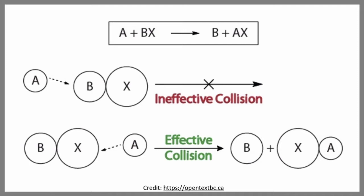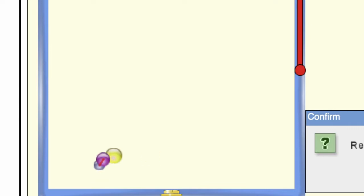We can also see this in this PhET simulation here. If the molecules hit at just the right angle, a reaction will happen. However, if they hit at the wrong angle they will just bounce off each other and the collision will not be effective.